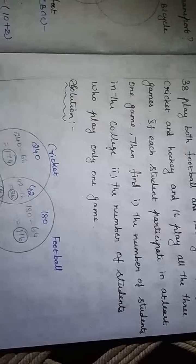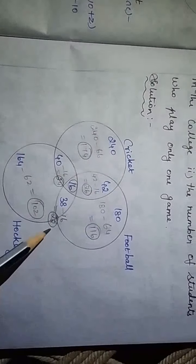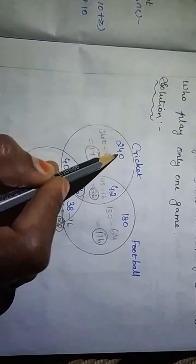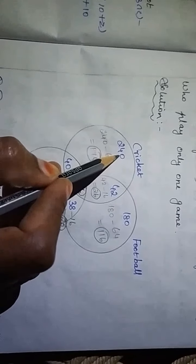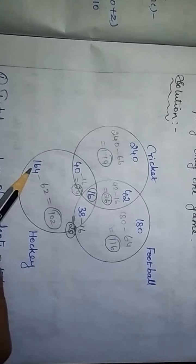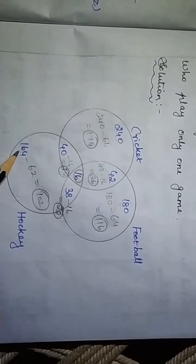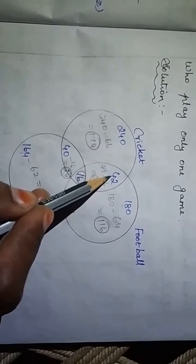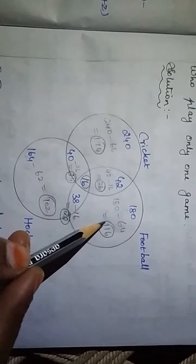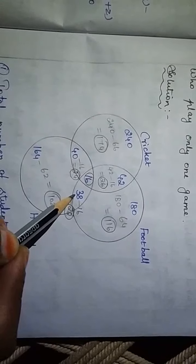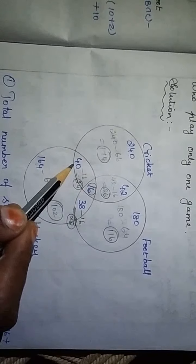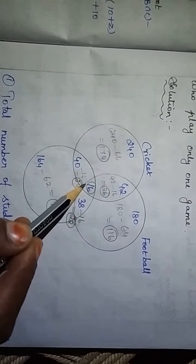Looking at the given data: cricket = 240, football = 180, hockey = 164. Both cricket and football = 42, both football and hockey = 38, both cricket and hockey = 40, and all 3 games = 16. Each student participates in at least one game.